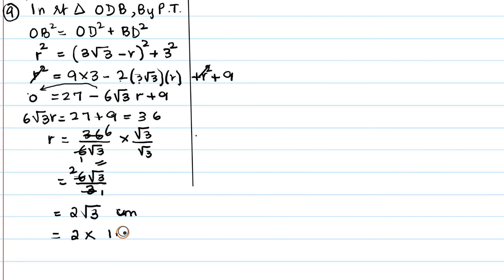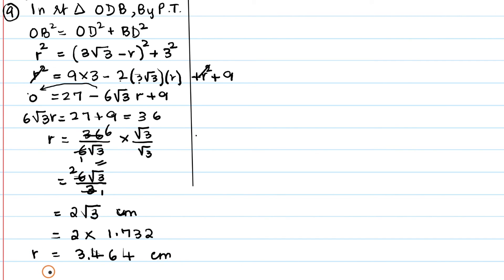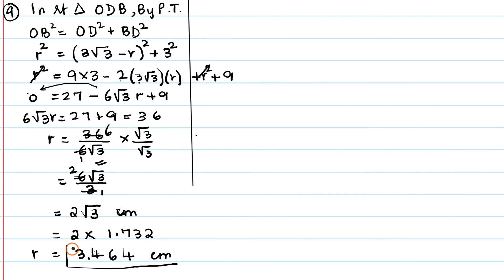If we want the decimal value, root 3 = 1.732, so r = 2 × 1.732 = 3.464 centimeters. That is the radius. I hope you understood how to solve this. Also let me know which city you are watching from. Stay healthy, stay safe — bye!